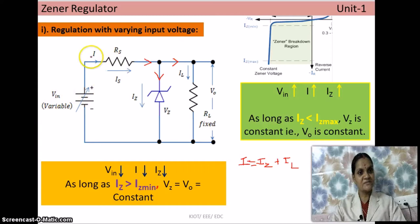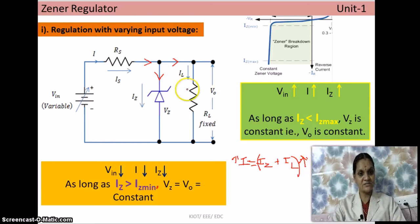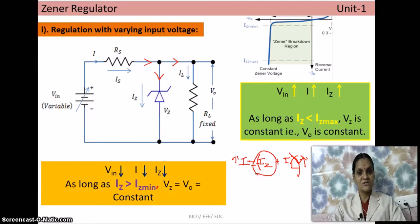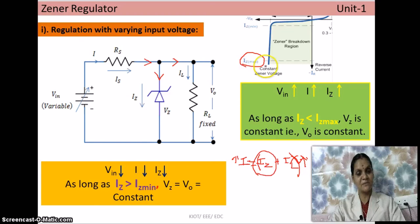Since RL is fixed, IL cannot change. Therefore, the increase in total current I must be compensated entirely by an increase in IZ. However, IZ can only increase up to IZ(max) — it cannot increase beyond this value. Once IZ exceeds IZ(max), the diode comes out of the breakdown region and can no longer function as a regulator.